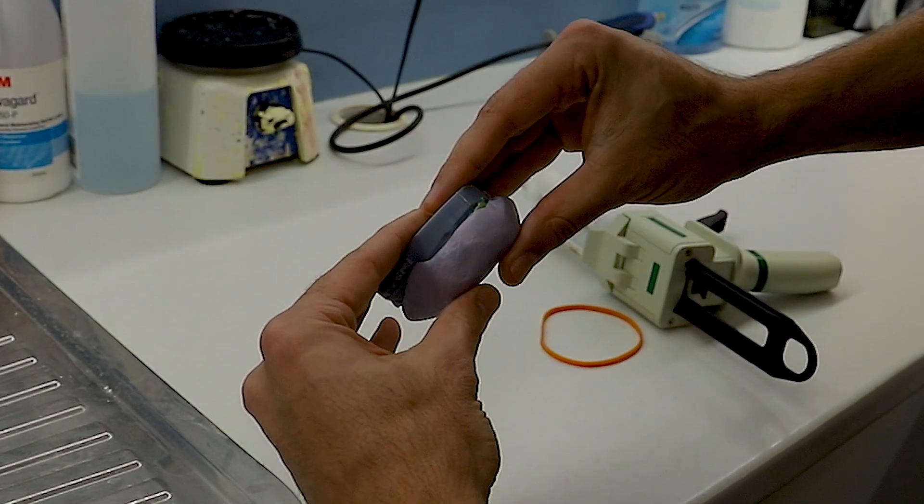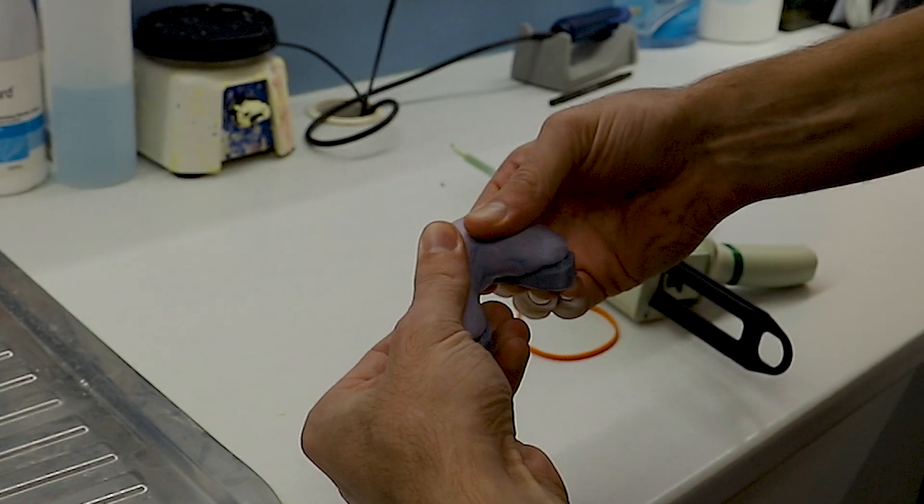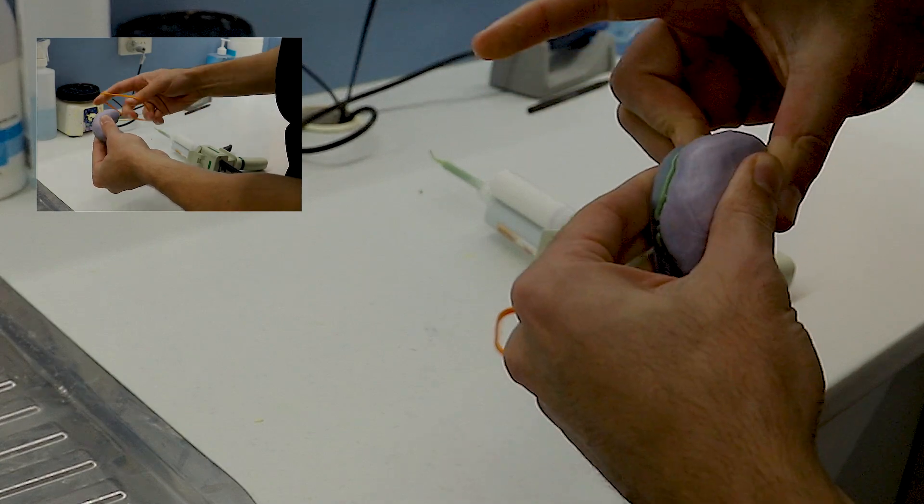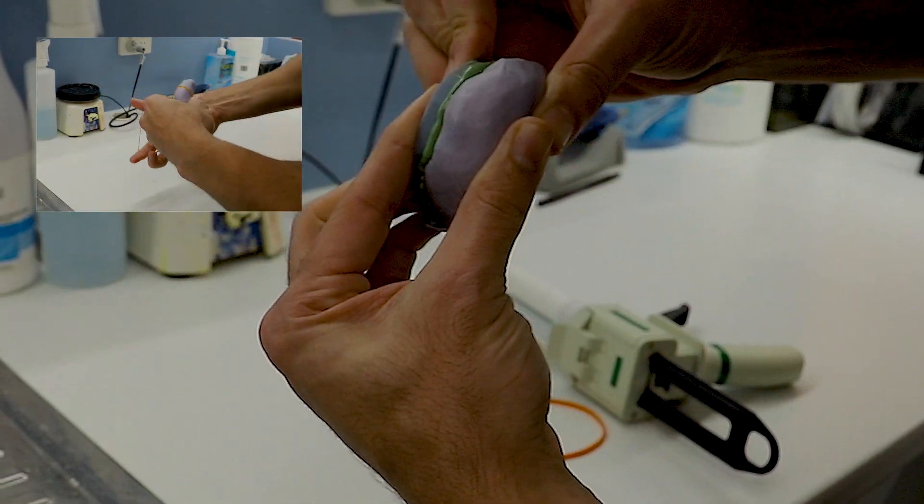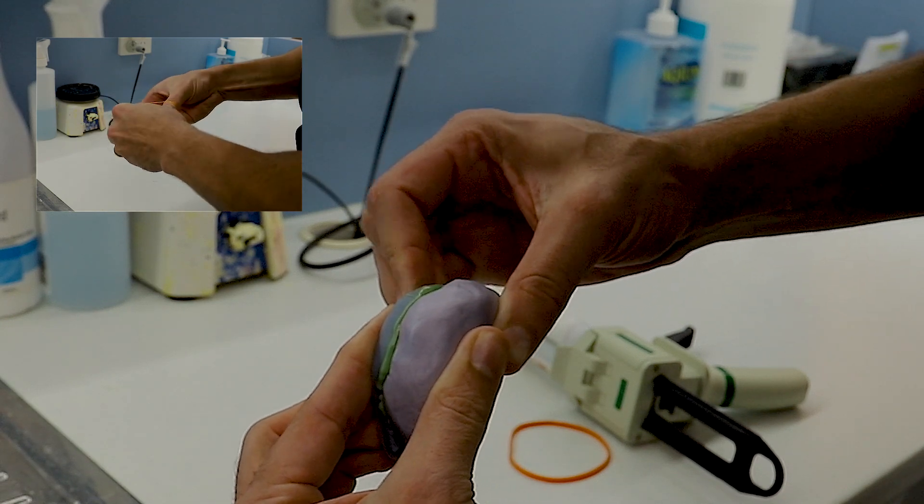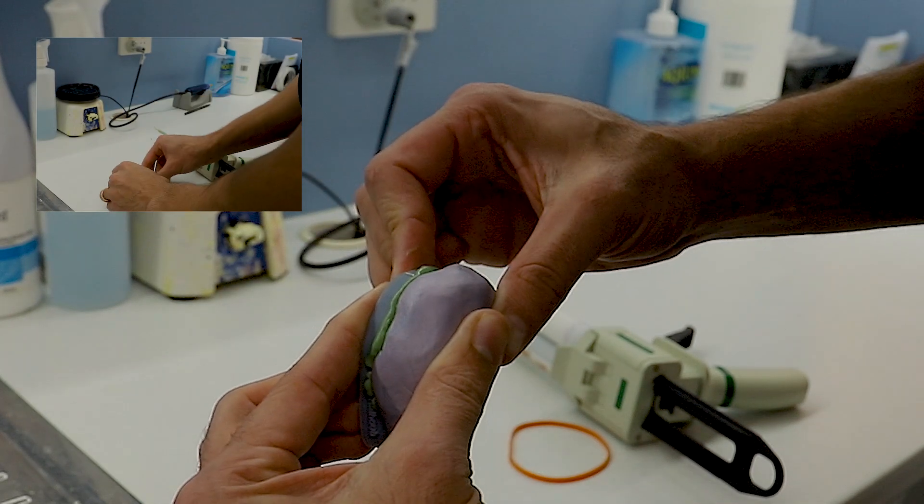And then we're going to put this over the top. Make sure to squeeze it really hard. Now you can keep that in place with the rubber band or what I like to do is just keep it in with my hands first. Once it sets for about a minute and you can feel that it starts to harden up, then I'll put it in a rubber band and then leave it for about another five.